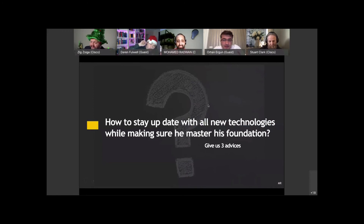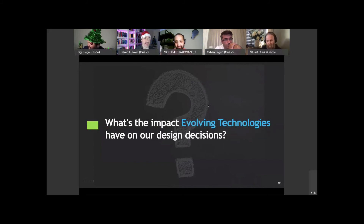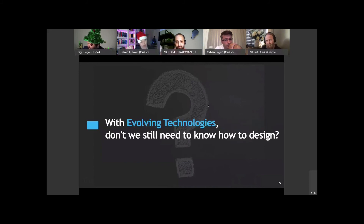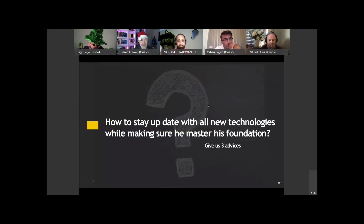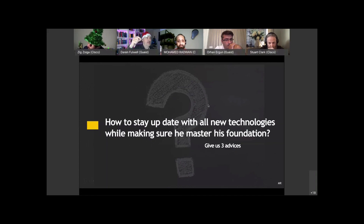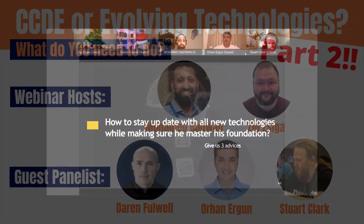Stuart hit the nail squarely on the head there, because it's about making sure operationally that the network is what it needs to be. That is exactly where you want to bring automation and orchestration to bear — making sure people can get the service they need when they need it. Stuart mentioned agility, CI/CD pipelines, and infrastructure as code, and it's about being able to provide that service reliably. That's exactly why you would use those technologies.